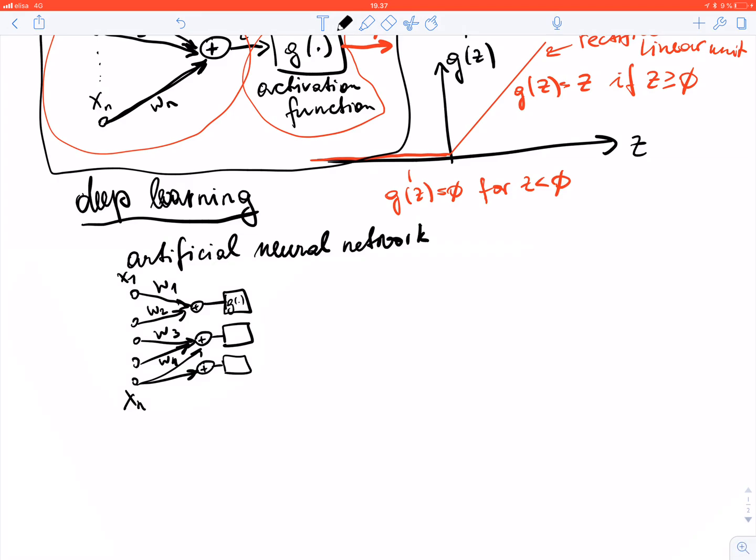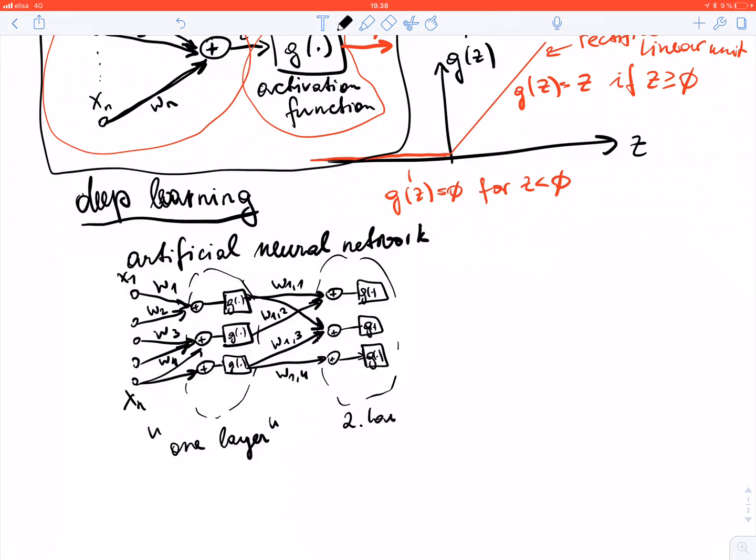Then we can add another layer, which consists of the same units: summations followed by activation functions. These are connected with the previous layer via weighted links, and these weighted links carry weights which we can adapt, which we can tune or learn based on data. We can connect any output of the first layer to any of the summation units in the next layer, which is then called fully connected. This would be the second layer.